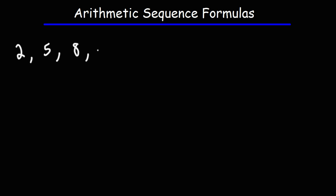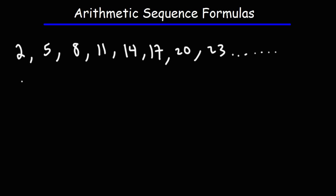Notice the pattern of numbers in this example: 2, 5, 8, 11, 14, 17, 20, 23, and so forth. The 2 is the first term, which we call a sub 1. 5 is the second term, 8 is the third term, 20 is the seventh term, 23 is the eighth term.